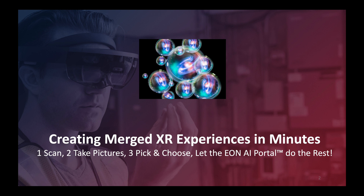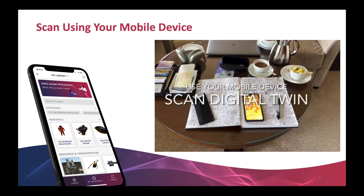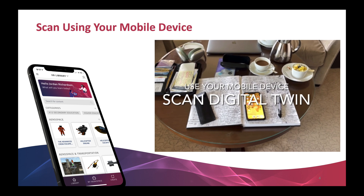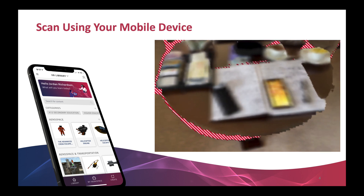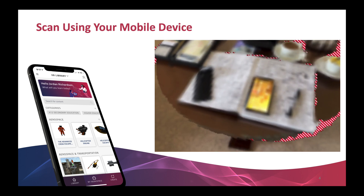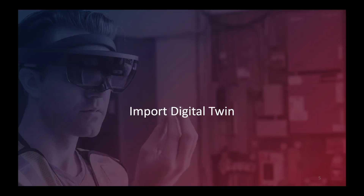Fasten your seatbelts — here we go. So the first thing you want to do is to scan the object. For that, you use your phone. You simply swipe the area that you want to create, and the phone captures that in the form of a scan. So now you have a digital twin.